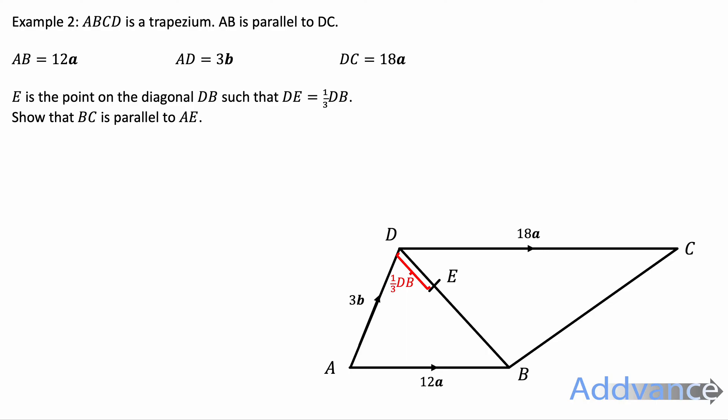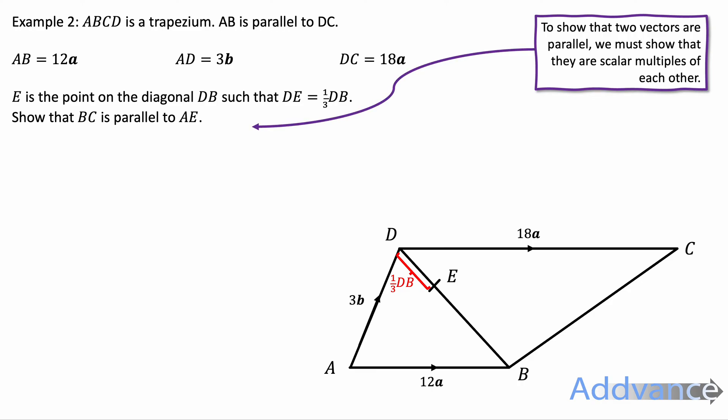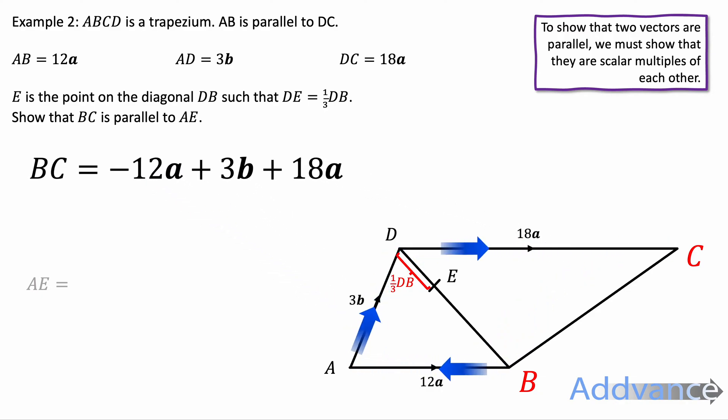We've labelled the diagram with the information from the question and we're going to try and find the vectors BC to AE and to show they're scalar multiples of each other. B to C. To go from B to C we're going to go along this path. That's minus 12a plus 3b plus 18a. Like this. We simplify that, minus 12a plus 18a is 6a plus 3b.